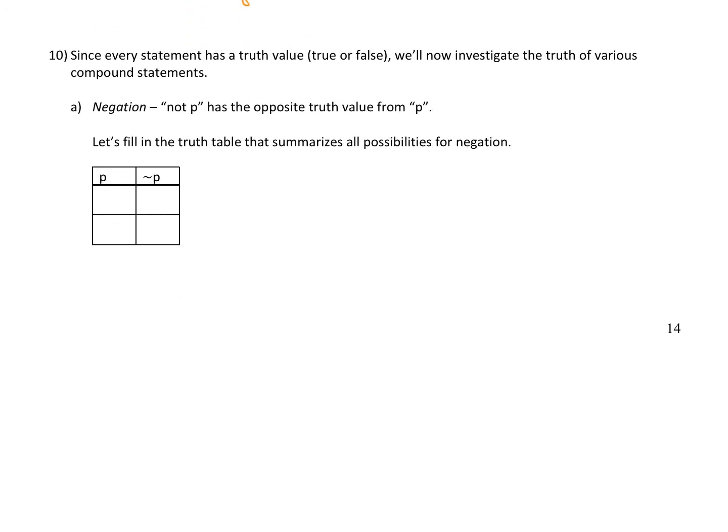Since every statement has a truth value — true or false — we'll investigate the truth of various compound statements. Negation: not-p has the opposite truth value from p. We can make a truth table summarizing all possibilities. When p is true, not-p is false; when p is false, not-p is true. This summarizes all possibilities.